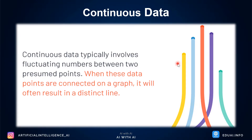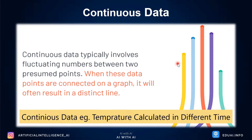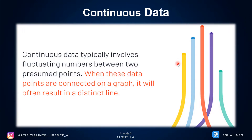Continuous data is typically a fluctuating number between two pre-assumed points. In simple words, when we plot the data, we may get a continuous line passing through the data. For example, the weight of newborn babies over a period of months will keep increasing, or the daily wind speed or temperature in a particular region at different time intervals — these change over time and have different values at different intervals. That is why we call it continuous data.